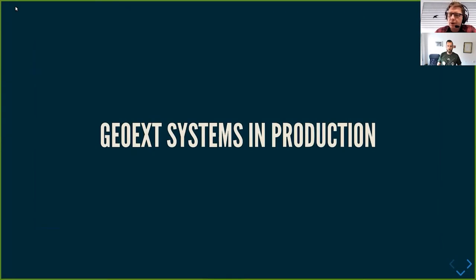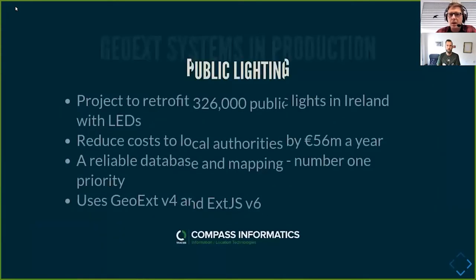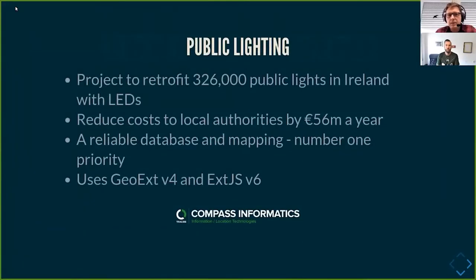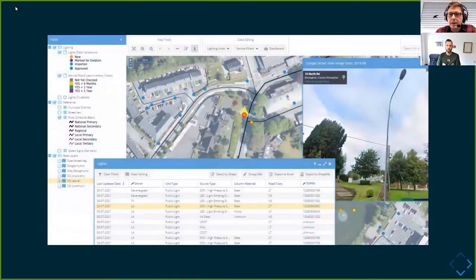We have picked a couple of production systems to show how these libraries are used. First, a project that Compass Informatics created: a public lighting system used to manage over 300,000 public lights in Ireland. The top priority was a reliable, stable, and robust database with solid mapping. This system uses GeoExt version 4 and ExtJS version 6 — the newest versions of those libraries. It features a grid, Google Maps integration, and streetlight management.